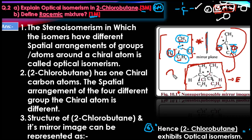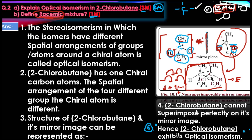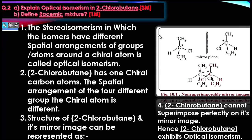One enantiomer can be dextrorotatory (rotates plane polarized light clockwise, denoted as +) and the other can be levorotatory (rotates anticlockwise, denoted as −). This is the most important point.